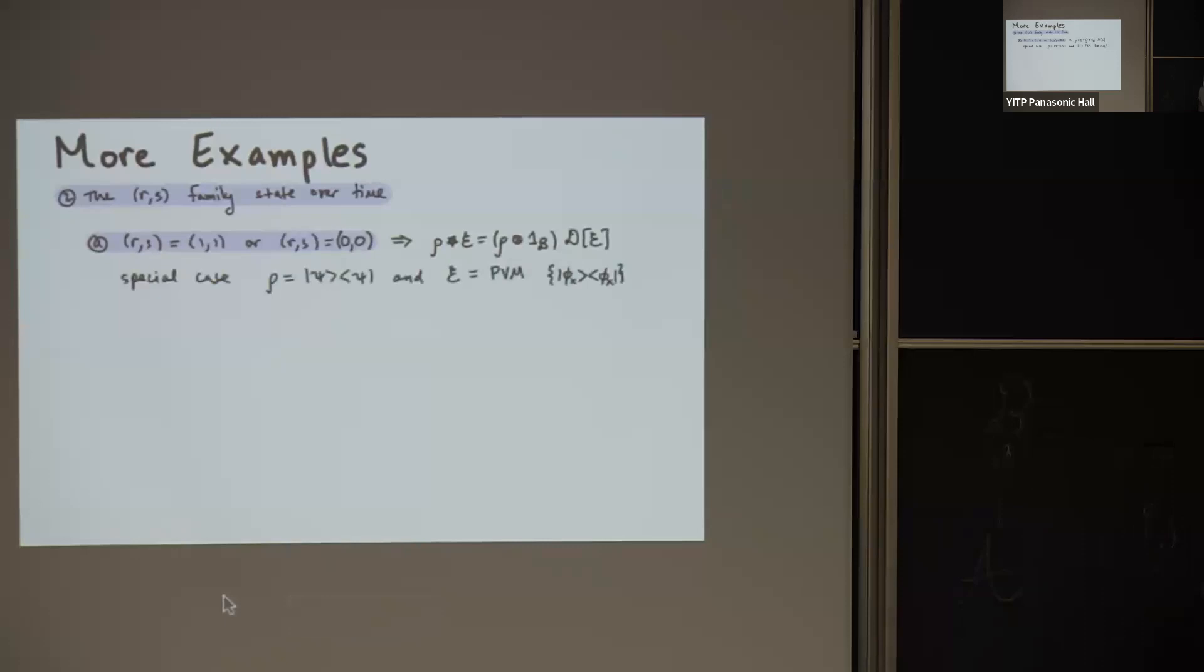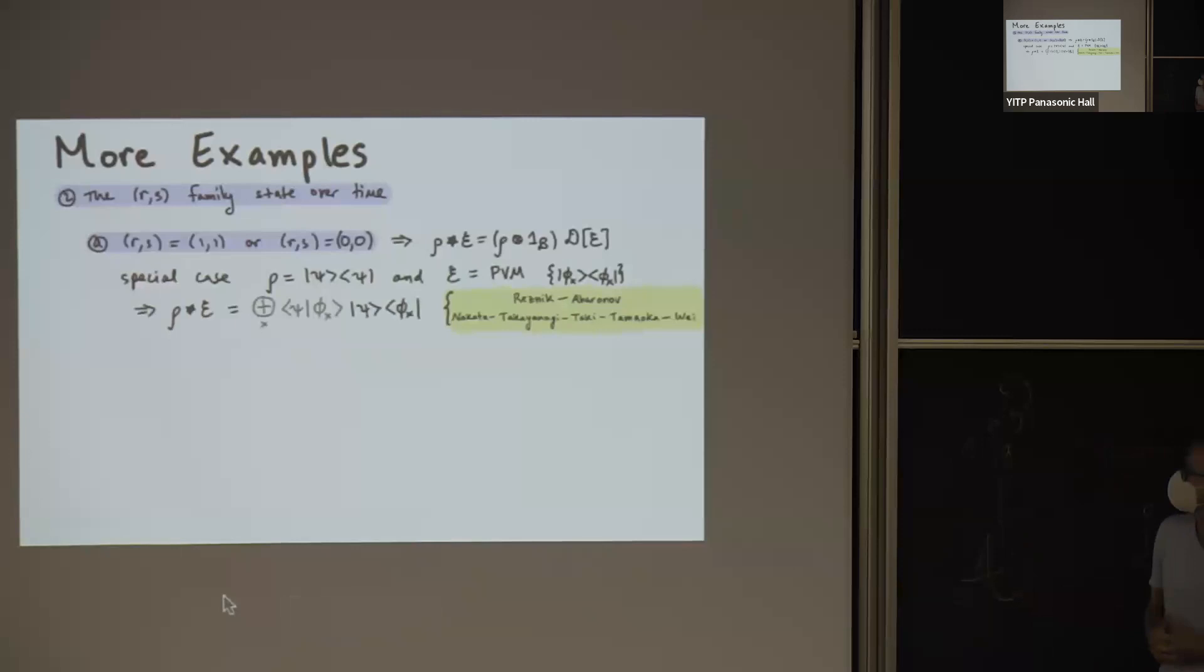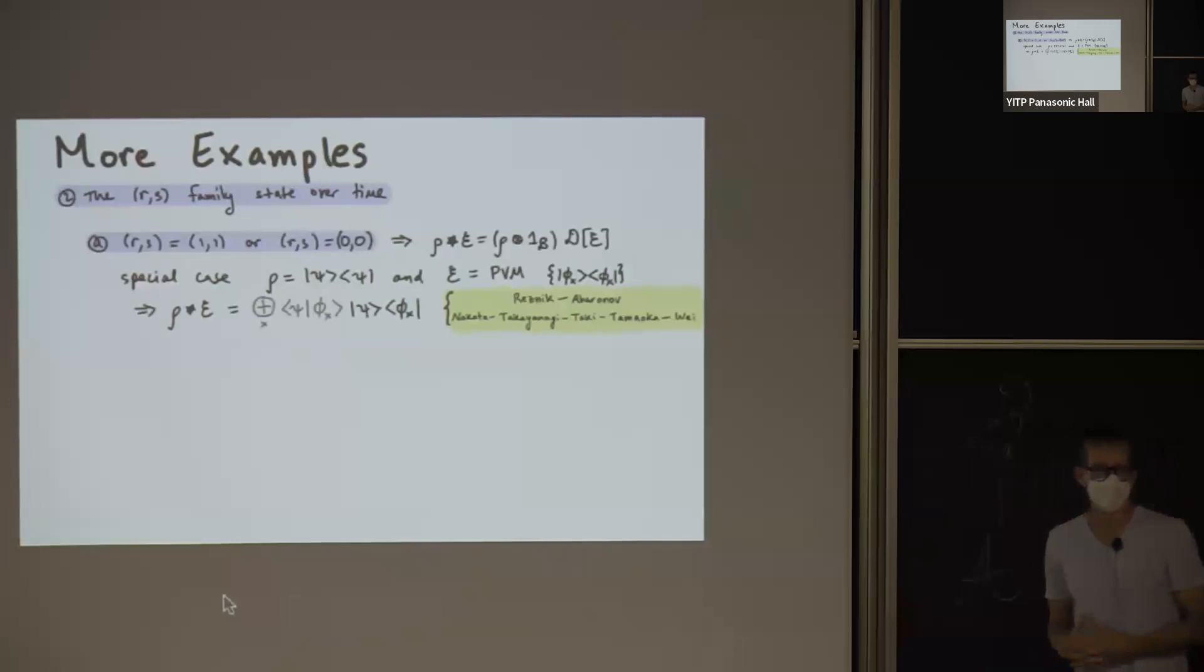In particular, if we just take rho to be a pure state, so think of an initial pure state, and then a projection-valued measure. So you have another orthonormal basis, phi x. You make a measurement, and that's described by actually a quantum channel, a quantum to classical channel in this case. You can think of post-selection too. And when you compute the associated state over time with respect to this definition, you actually get what's called the two-state of Resnick and Aharonov in their time-symmetric formulation of quantum mechanics. And actually, this object also appeared very recently in the work of Nakata Takayana-Giro in their context of holographic pseudo-entropy. If you compute the Bayesian inverse associated to this definition, then you get what's called the normalized two-state in Resnick and Aharonov, or the transition matrix in Nakata et al.